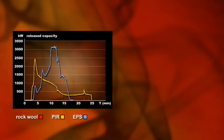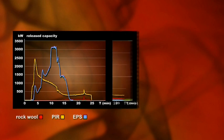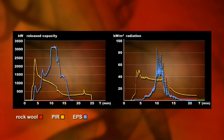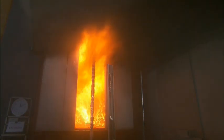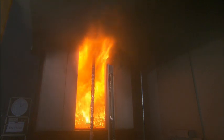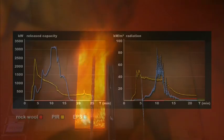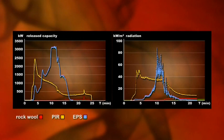The graph shows that the released capacity and radiation level in particular increase for PIR within a short time. When using 30 square meters of PIR in a room corner, a large capacity is released — more than 2,000 kilowatts in 2 minutes — along with a radiation level that is many times more than the maximum permitted level of 15 kilowatts per square meter.